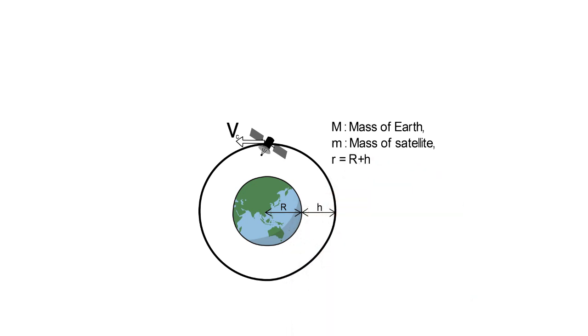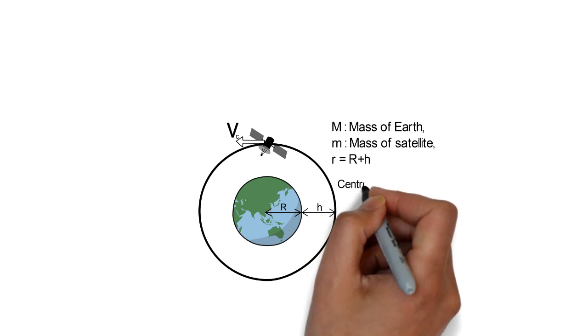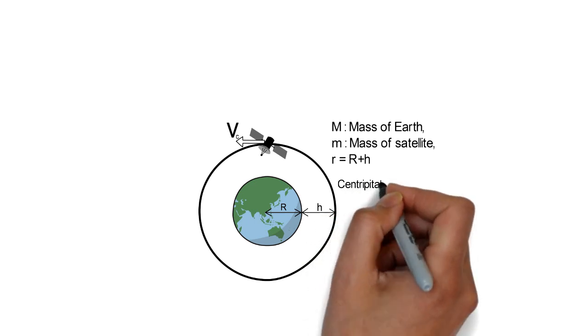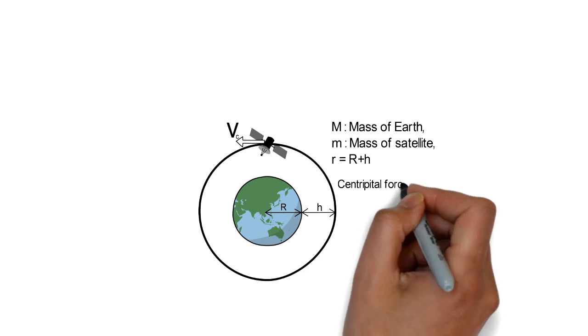The necessary centripetal force for the satellite to revolve around the Earth is given by the gravitational force exerted by the Earth on the satellite. So centripetal force equals gravitational force.